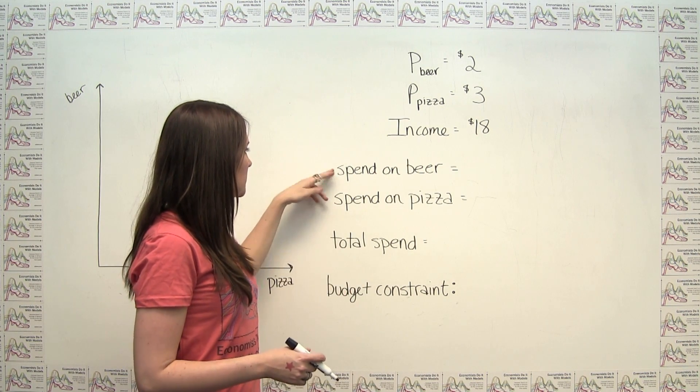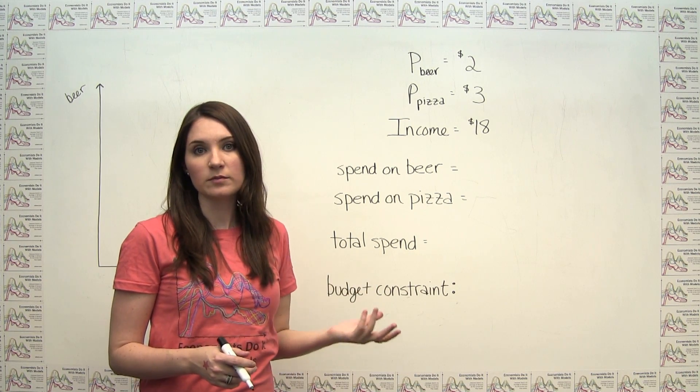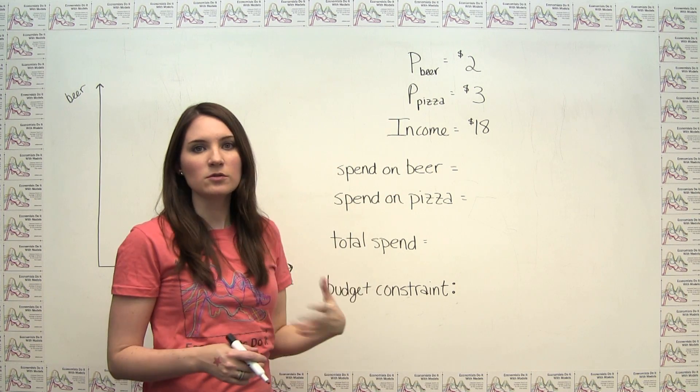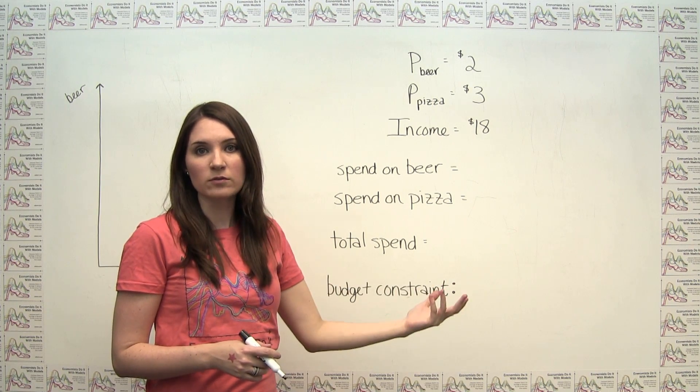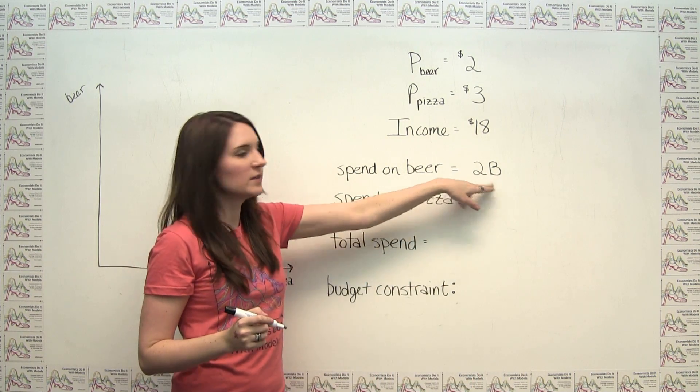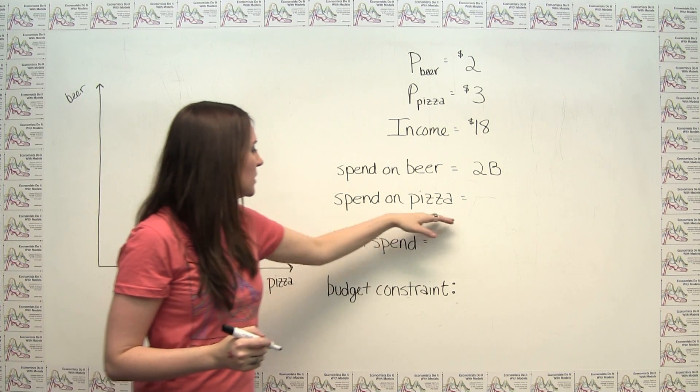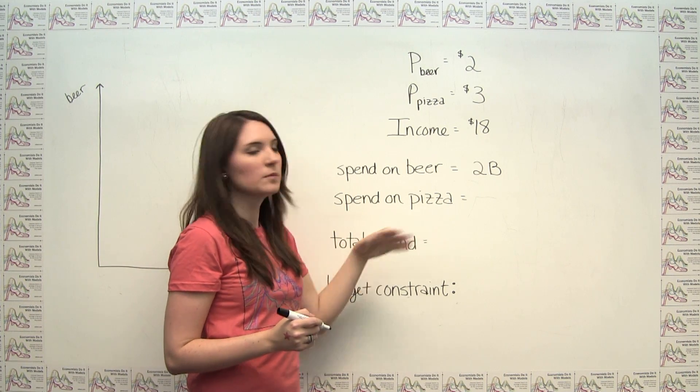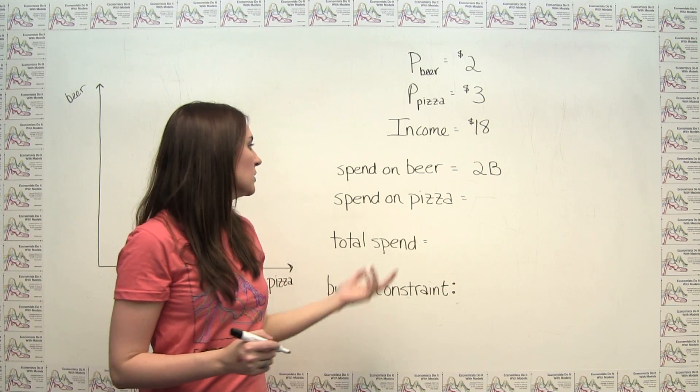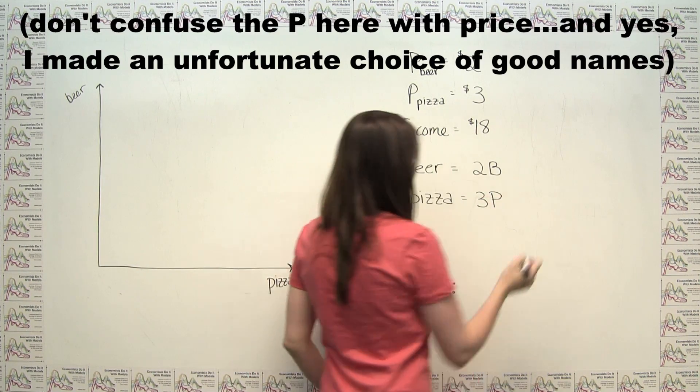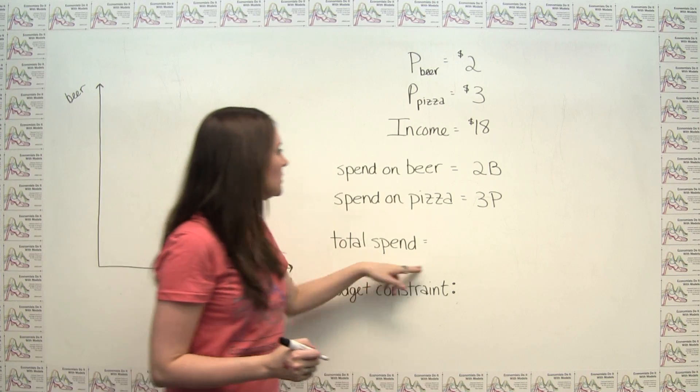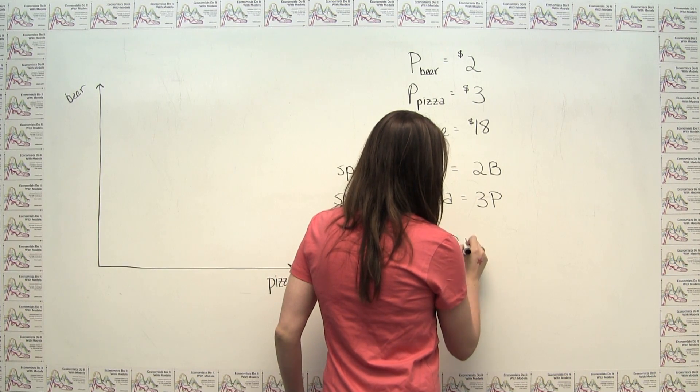So then we can think about our total spend on beer and our total spend on pizza. If each can of beer costs $2, then our spending on beer is just 2 times however many cans of beer we're consuming. So we can just call this 2b, where b is the quantity of beer. Similarly, we can think about our spend on pizza, which is just $3 times however many slices of pizza we're consuming. So we can just say that this is 3p. In which case, our total spend on those two goods together is just 2b plus 3p.